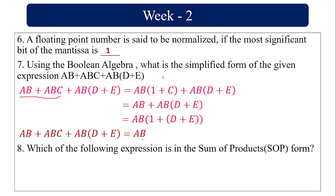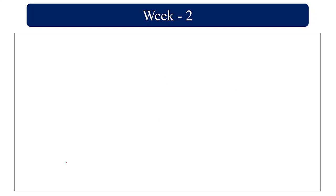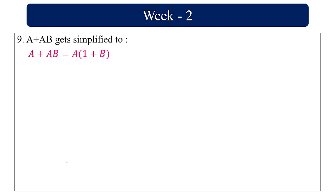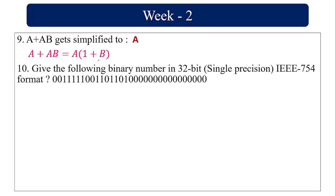Identify the following expression: it is a sum of products, where the product terms AB and CB are summed. This is called a sum of products. Also, A plus AB simplifies by taking A common: A(1 plus B), and since 1 plus B equals 1, the simplified output is A.